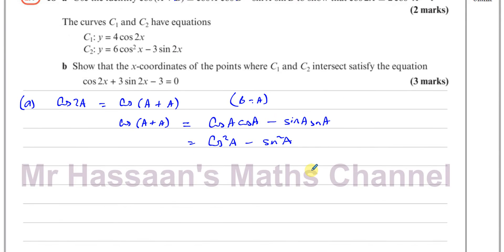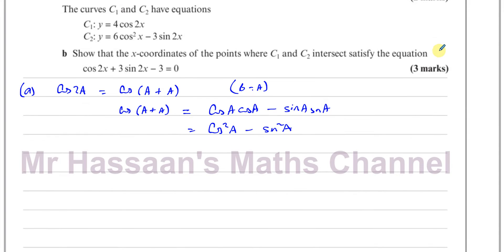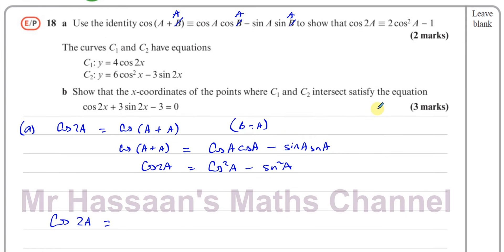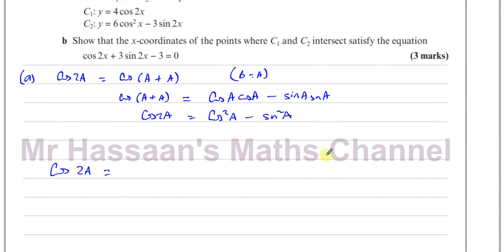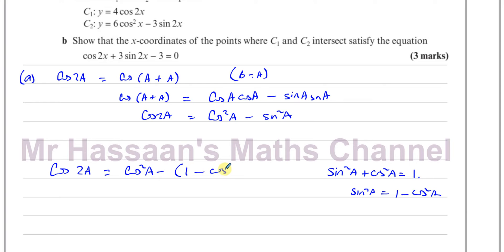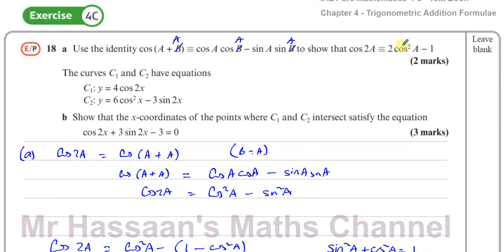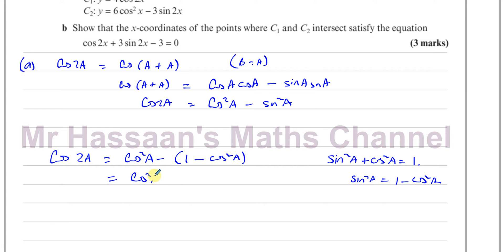We haven't quite got there because we have to show this equals 2cos²A − 1. So cos2A equals cos²A − sin²A. To express it in that form, I'll replace sin²A in terms of cos²A. Using the identity sin²A + cos²A = 1, sin²A = 1 − cos²A. So this becomes cos²A − (1 − cos²A), which is cos²A − 1 + cos²A, giving 2cos²A − 1, which is what we had to show.